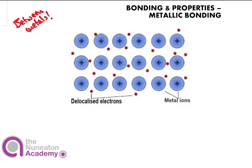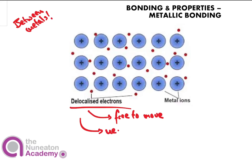Instead, what they do is they just allow the electrons to move freely in between the different neighbouring metal atoms. So what we have are delocalised electrons — electrons from the metals that are bonding with each other that are free to move. Those negatively charged electrons continually move in and around the structure, meaning that the metal ions have lost electrons and so are positively charged.